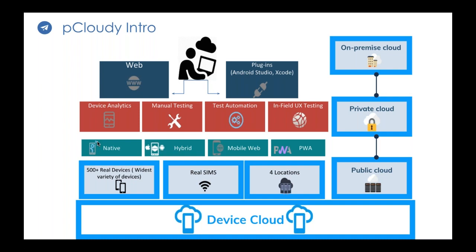Our devices are located at four locations across the world: one in Bangalore, one in California, one in Sydney, and one in the Philippines. This is all about our public cloud. The most popular business model is the public cloud, which you would see when you log in at www.pcloudy.com. On sign-up you can get 60 minutes of free access, and once those are up there are subscription plans you can avail of.